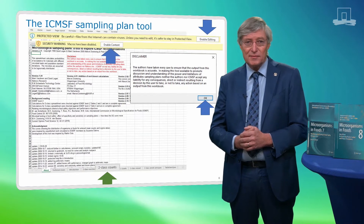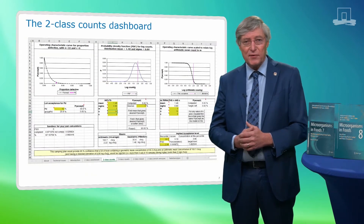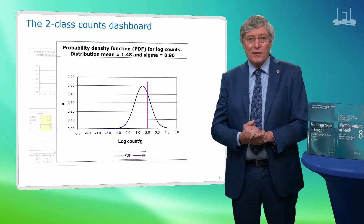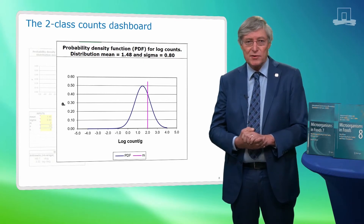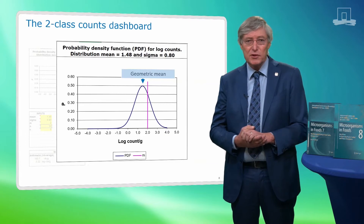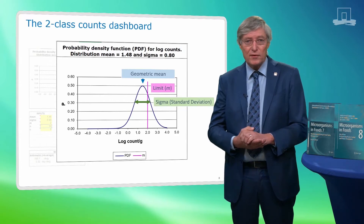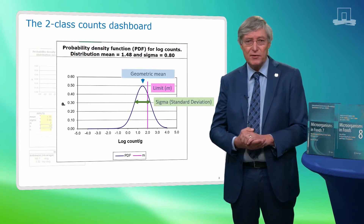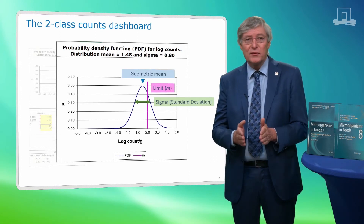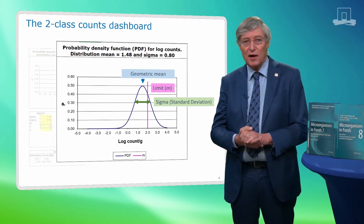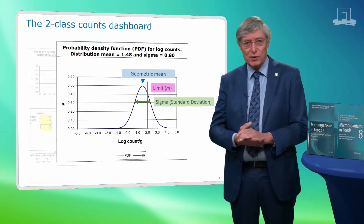Choose the two-class counts tab to open the dashboard that we will use for our calculations. On the dashboard, we see various graphs and calculation boxes — we will focus on the ones in the middle. The graph shows the likely distribution of log counts in the food lot studied. The peak of the plot corresponds to the geometric mean. The purple line represents the limit, small m, chosen in the sampling plan. The width of the plot depends on sigma, the standard deviation chosen. The distribution will be more narrow for smaller values and more wide for higher values of sigma. The choices for small m, sigma, and other variables are made in the input box below the graph.